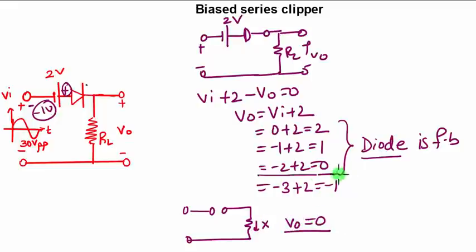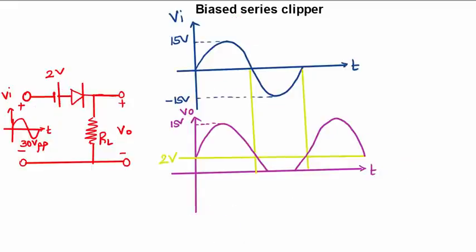Hence you will not get any output after 2 volts. So if you are marking the 2 volts DC level, after 2 volts you will get output till minus 2 volts. After that you won't get any output.